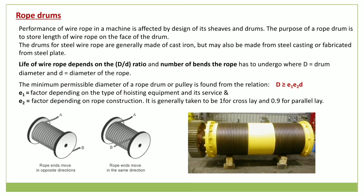The next component is the rope drum. A rope drum is essentially a storage area for ropes. The performance of the wire rope in a machine is affected by the design of its sheaves and drums. The purpose of the rope drum is to store a length of wire rope on the face of the drum. Wire ropes under tension from the weight of the load being lifted can be coiled by rotating the drum, and uncoiled by rotating the drum in the opposite direction.